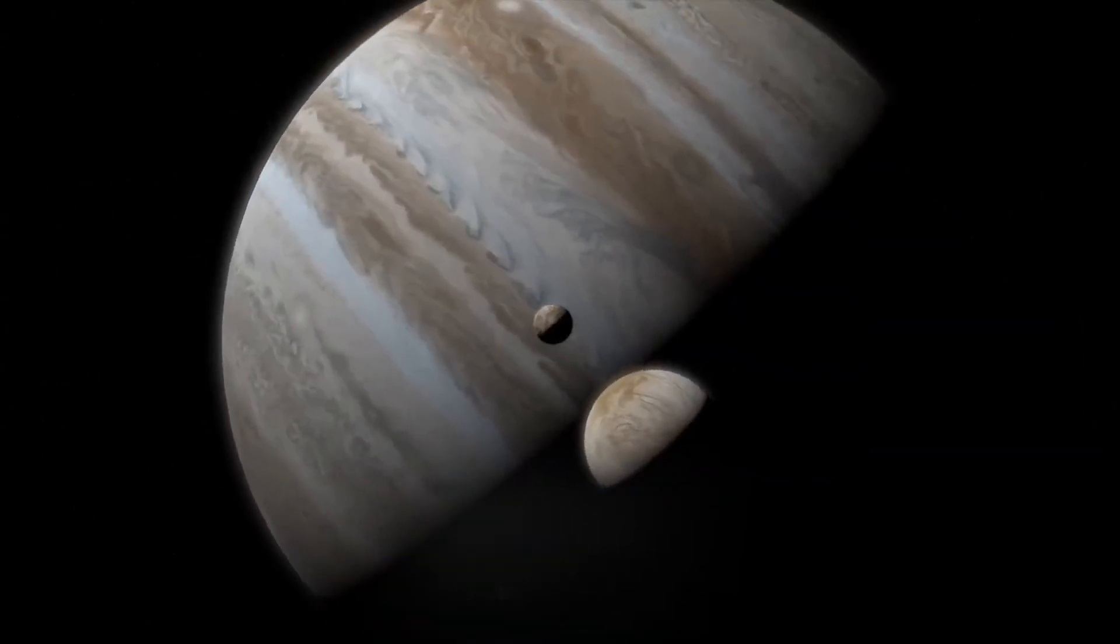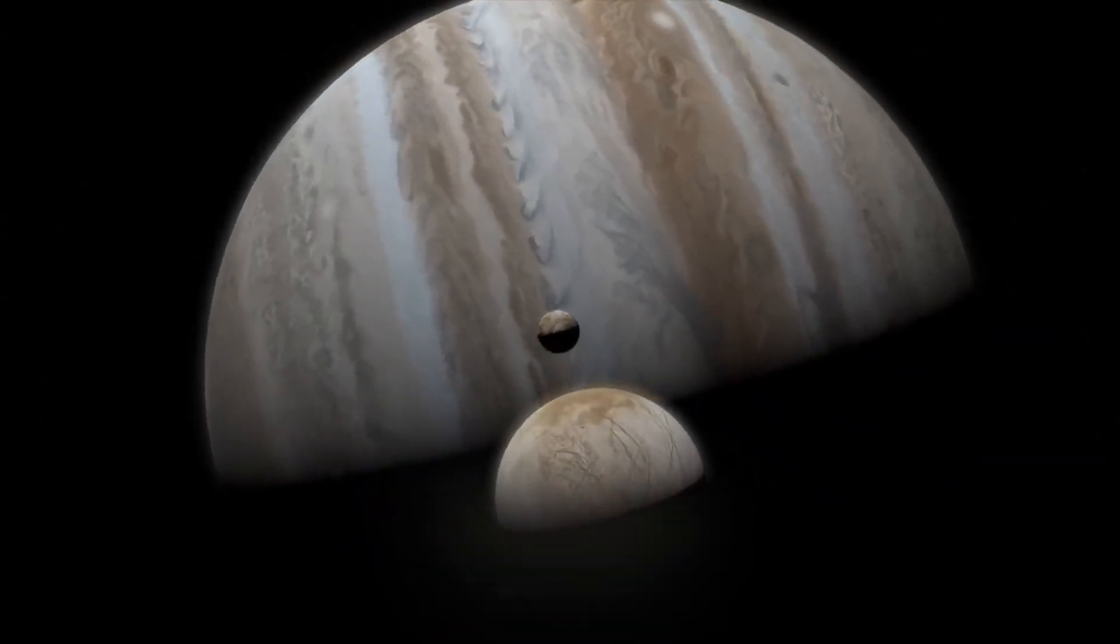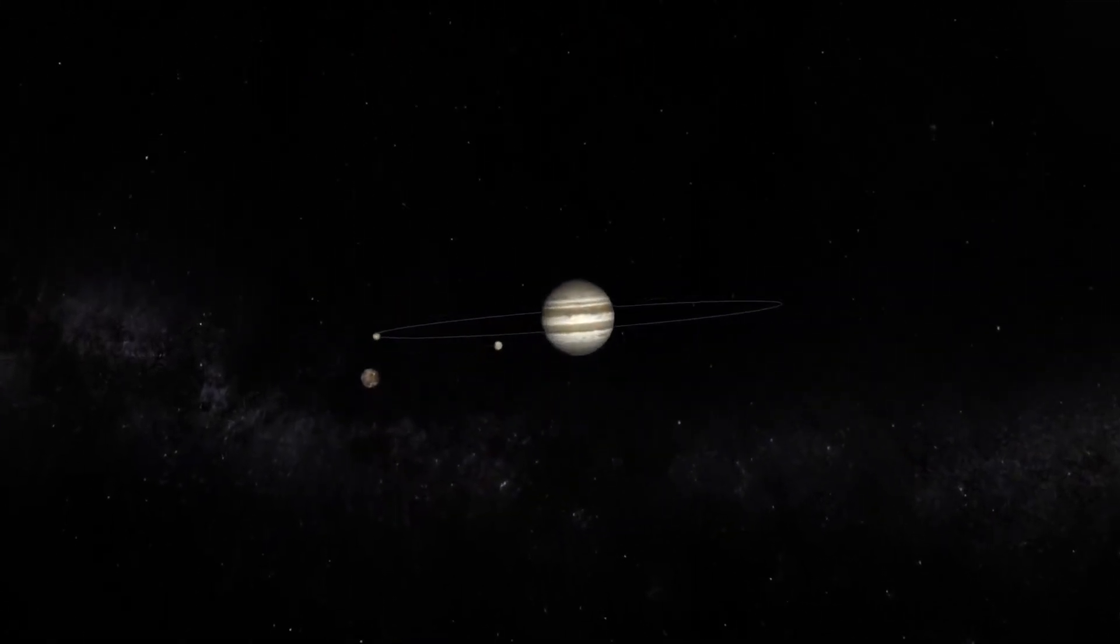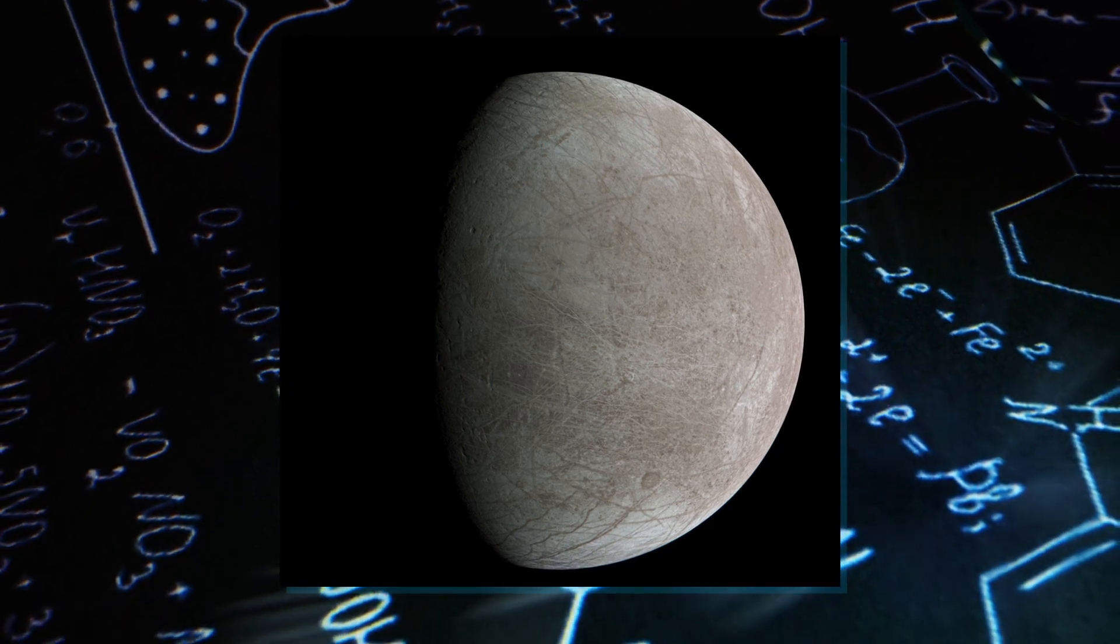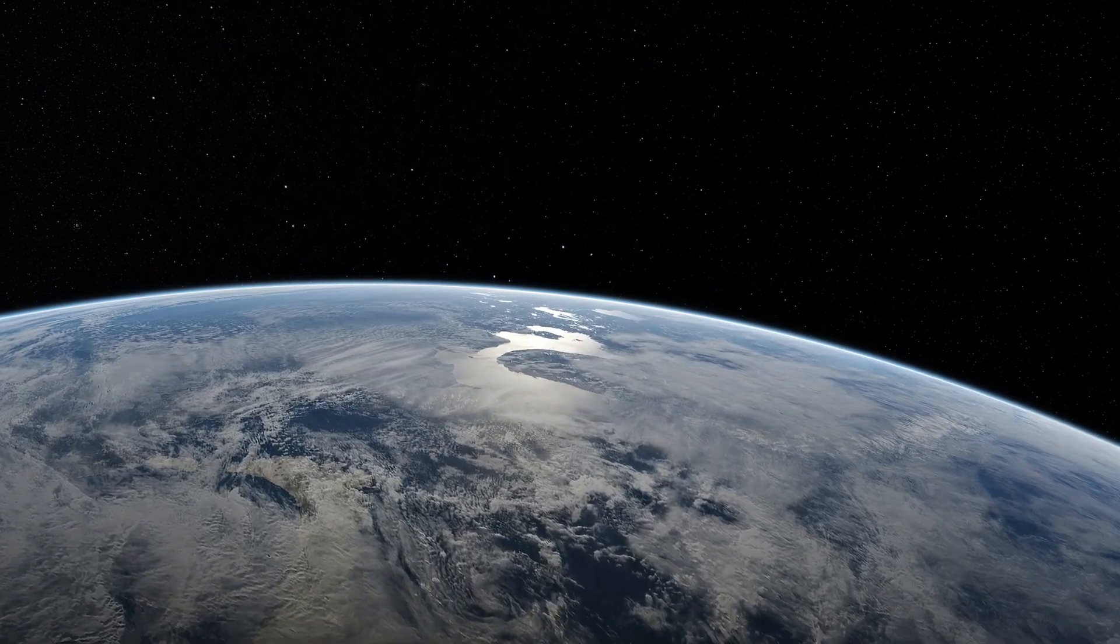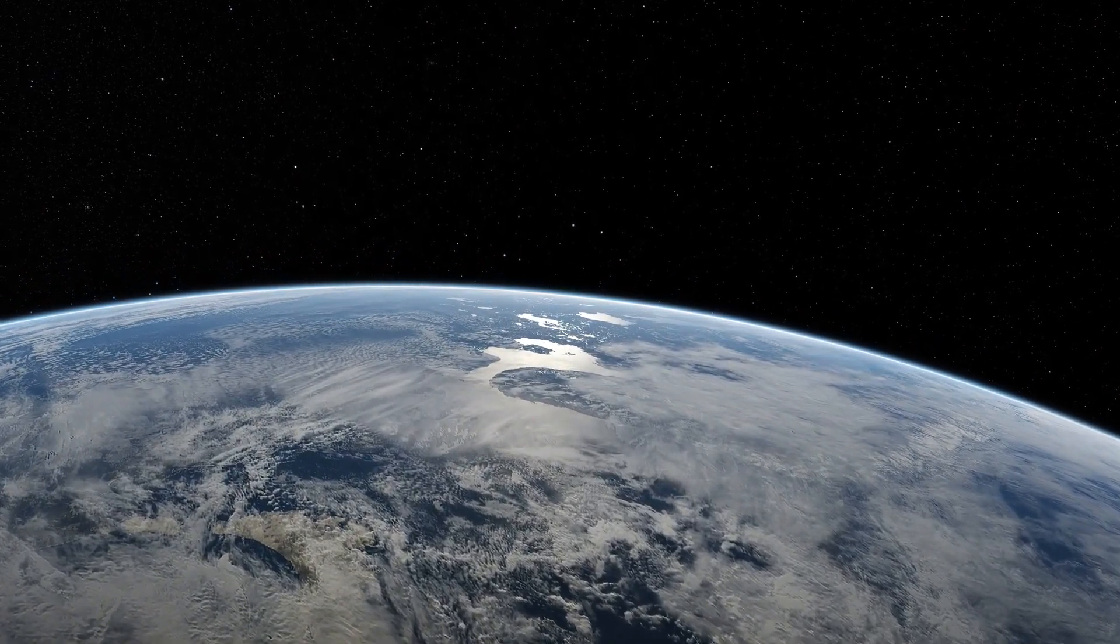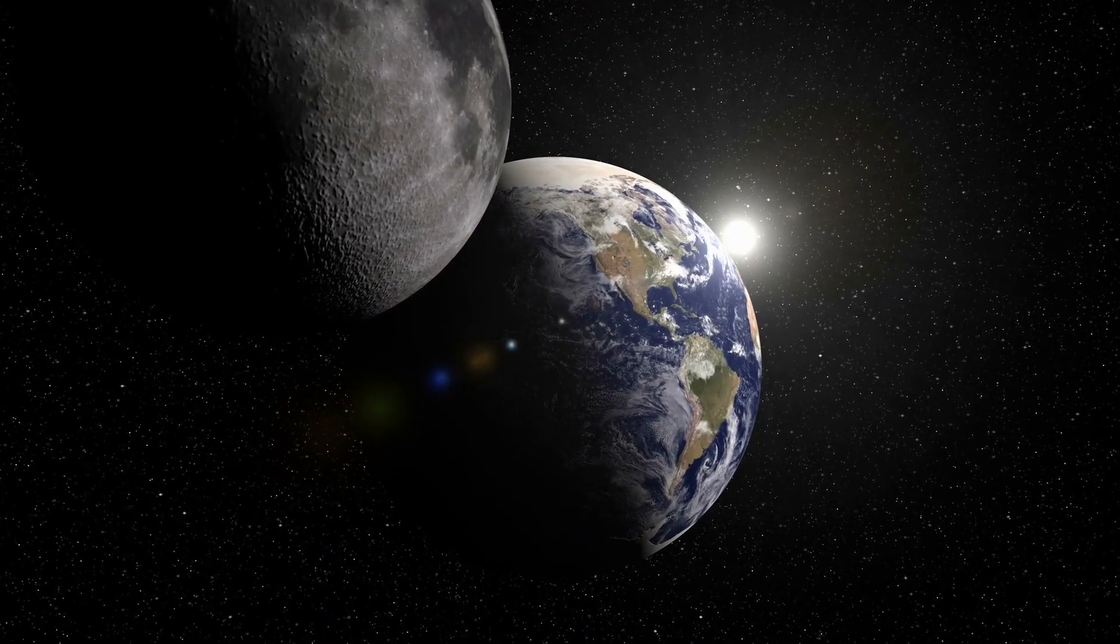Here's how it works. As Europa orbits Jupiter, the massive gravitational forces exerted by the gas giant cause the Moon's shape to constantly change. This is similar to the way tides rise and fall on Earth due to the Moon's gravitational pull.